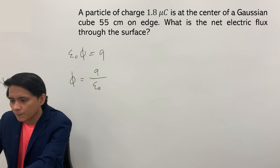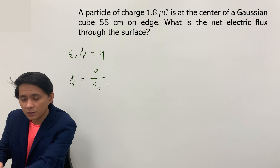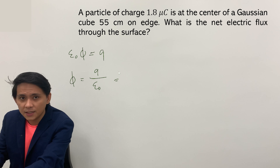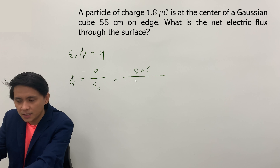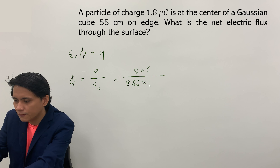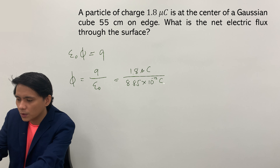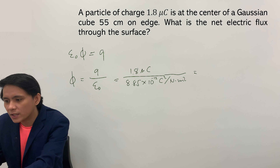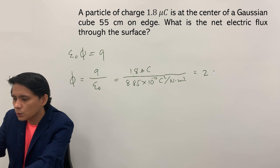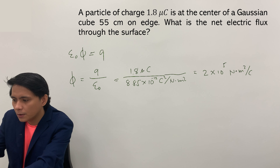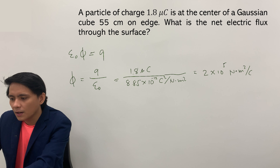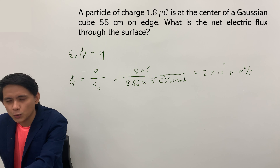From the given, we have a charge of 1.8 microcoulombs at the center. To get the electric flux, substitute the charge divided by epsilon-naught, which is approximately 8.85 times 10 to the negative 12 coulombs squared per newton meter squared. The electric flux is equivalent to 2 times 10 to the 5 newton meters squared per coulomb — that is the electric flux on the surface of the Gaussian cube.